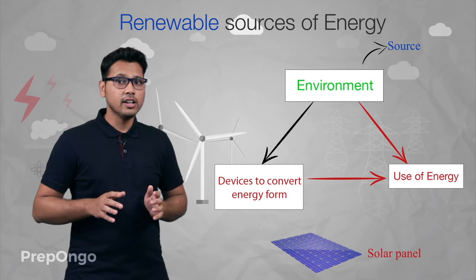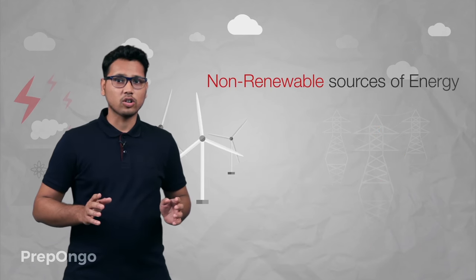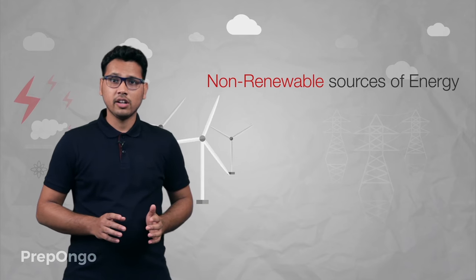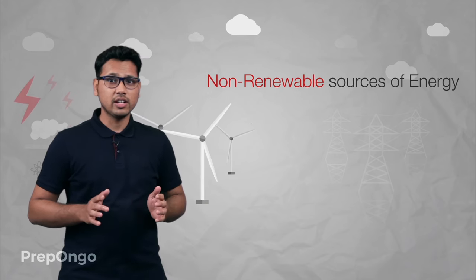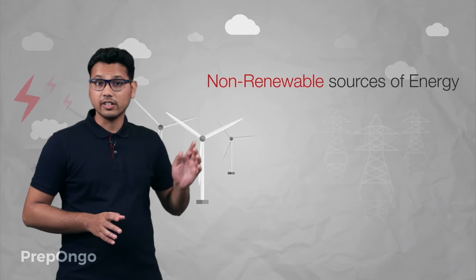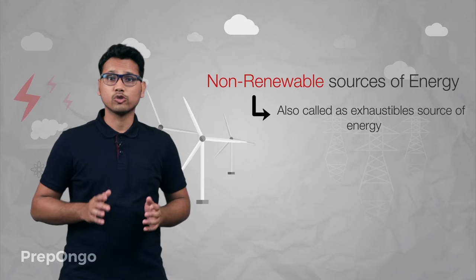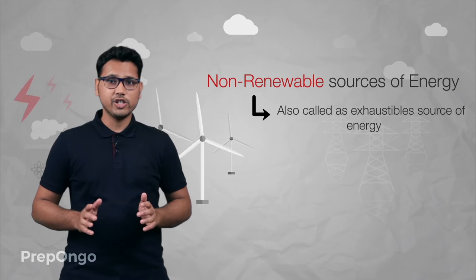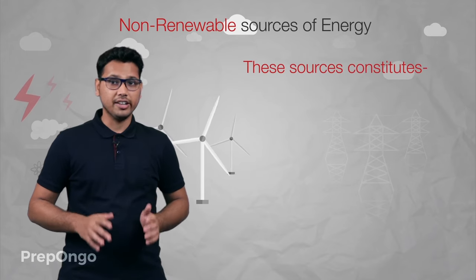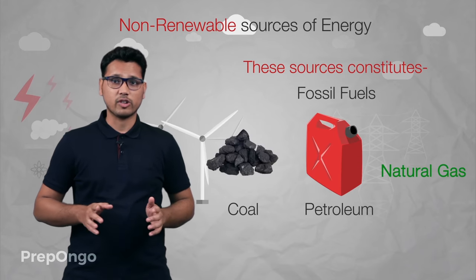So we can say that renewable sources are non-exhausting sources. Now let us look at the second category, which is non-renewable sources of energy. As the name suggests, these are sources which cannot be regenerated — their reserve is limited — and hence they are also called exhaustible sources of energy, as once they are used they cannot be made again. These sources constitute energy from fossil fuels like coal, petroleum, and natural gas.